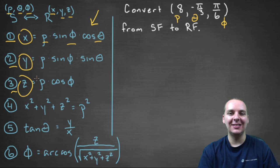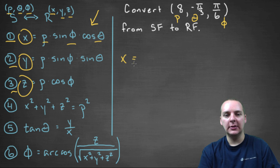So like I said, this is a lot simpler, a lot faster, a lot easier than going the other direction. So let's get right to it. So our x, using conversion number one, will be rho, which is 8,